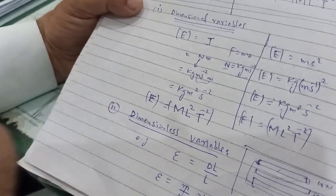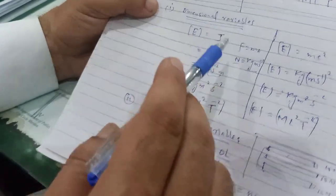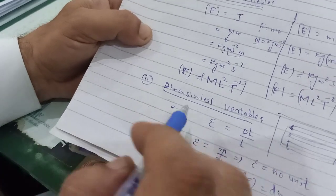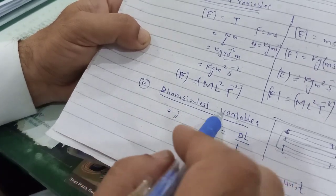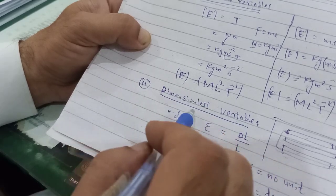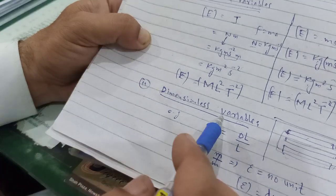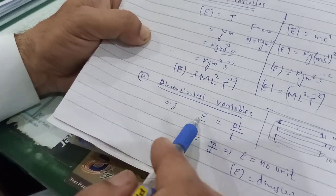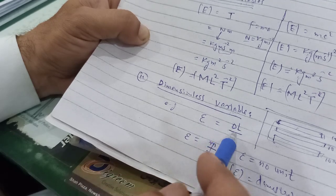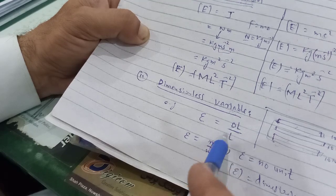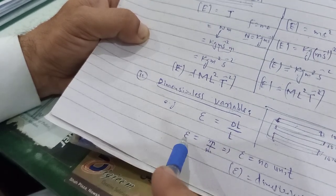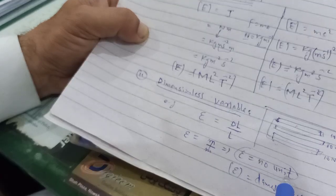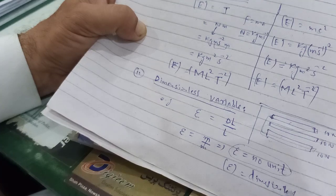The second type is dimensionless variable — those physical quantities whose values are not fixed and whose dimension also does not exist. A physical quantity whose value can be varied but whose dimension doesn't exist is called a dimensionless variable. For example, strain. Strain is defined as change in length per original length. The unit of length is meter, so meter cancels with meter. As a result, strain has no unit, and if a quantity has no unit it cannot have dimension, so it is dimensionless.